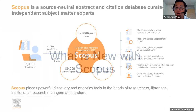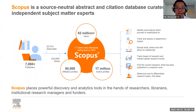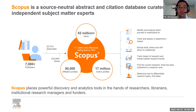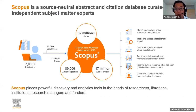So what is new with Scopus? We work together with over 7,000 publishers. We have indexed over 25,751 serial titles, and as of the moment we have over 82 million items on Scopus. We are the world's largest abstract and indexing database, and through this big data collection we have accrued 17 million author profiles and over 80,000 affiliation profiles globally.